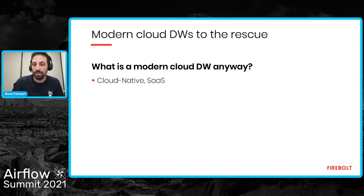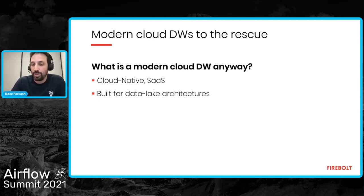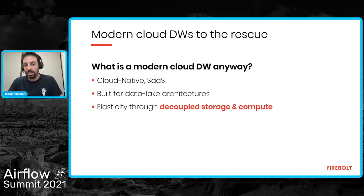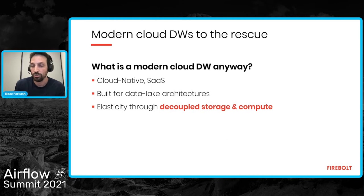A modern cloud data warehouse is built for data lake architectures — intended to complement your data lake and support data lake-scale volumes. Finally, a modern cloud data warehouse must deliver elasticity through decoupled storage and compute. This is why I don't consider Redshift a modern cloud data warehouse — it was the first cloud data warehouse, but when I say 'modern' today we need to really double down on the concept of decoupled storage and compute.